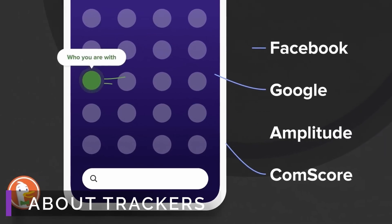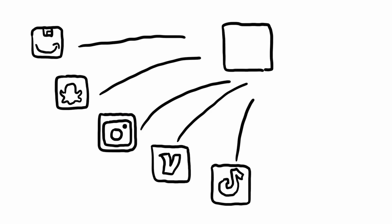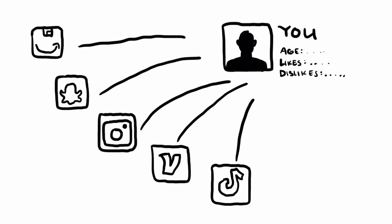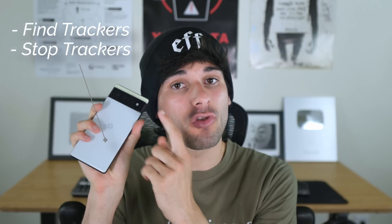Most of the apps on your phone have trackers — hidden software designed to collect data. These trackers are cross-referenced between your apps to build a comprehensive profile of who you are and what you do, all without your direct consent or control. Or so you thought. Today I'm going to teach you how to find trackers in your apps and how to stop them in their tracks, to give you more control in our world of surveillance capitalism.